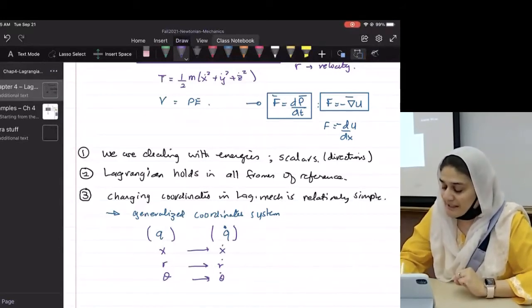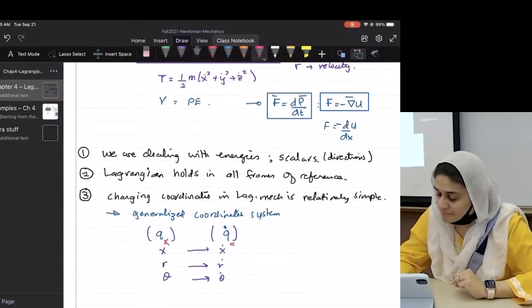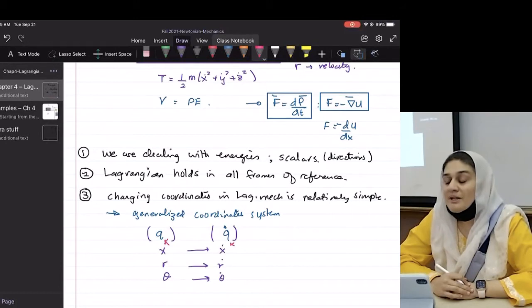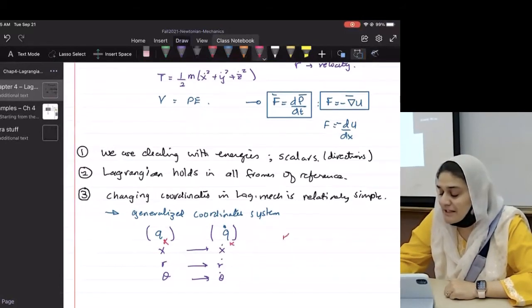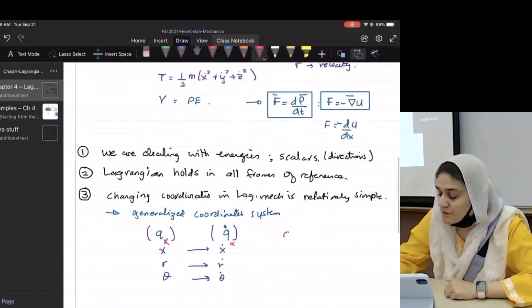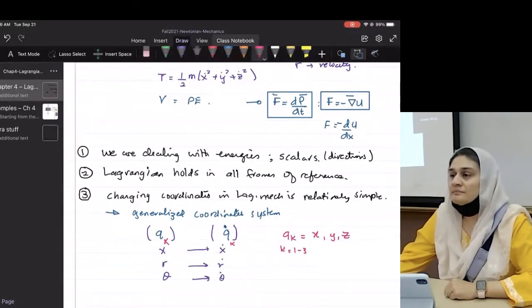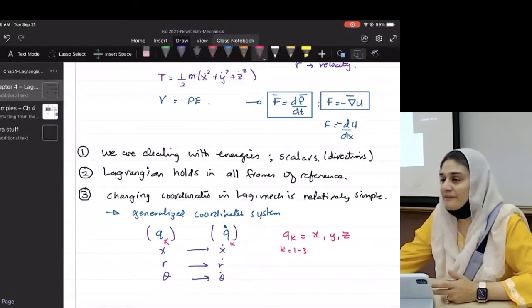You just use a generalized coordinate and now how do you deal with three-dimensional space? You deal with it by saying, I'm going to put down this K. Once you put down this K, what you're saying is that K goes from one to three. So QK actually means X, Y, and Z, where K goes from one to three or four or five or N or whatever other number you have.